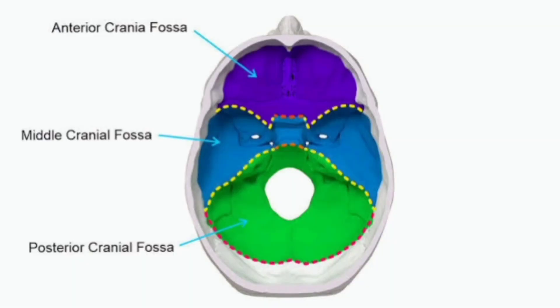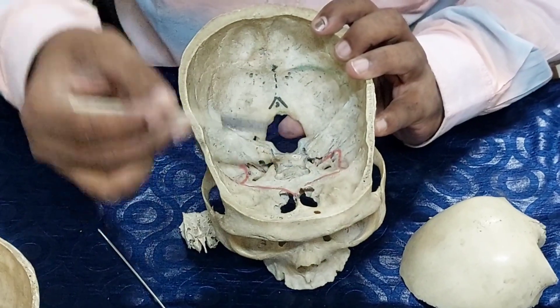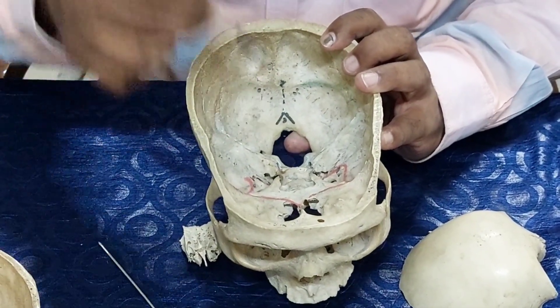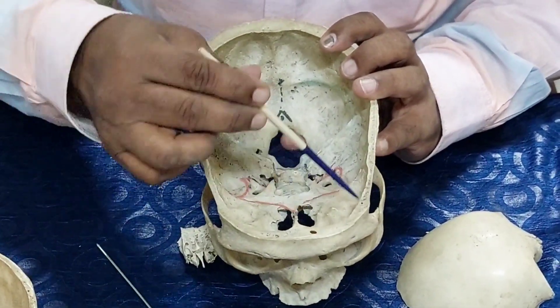Now we can see that the anterior cranial fossa of all three cranial fossae is at the highest level, and the posterior cranial fossa is at the lowest level. This is the end of the video.